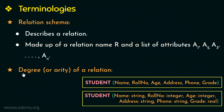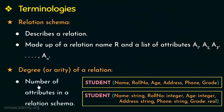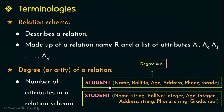Next, let us see what is degree or arity of a relation. It is defined as the number of attributes in a relation schema. In this example of the relation schema we just saw, the number of attributes is 6. Therefore, the degree of this relation student is 6.